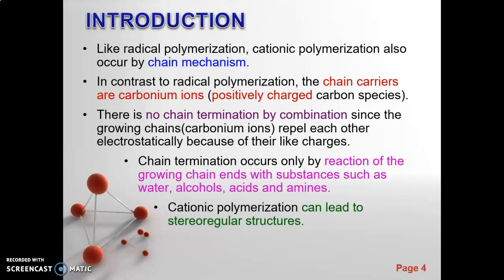Like radical polymerization, cationic polymerization also occurs by chain mechanism. In contrast to radical polymerization, the chain carriers are carbonium ions, positively charged carbon species. There is no chain termination by combination since the growing chains repel each other electrostatically because of their like charges. Chain termination occurs only by reaction of the growing chain with substances such as water, alcohol, acid, and amines. Cationic polymerization can lead to stereoregular structures.